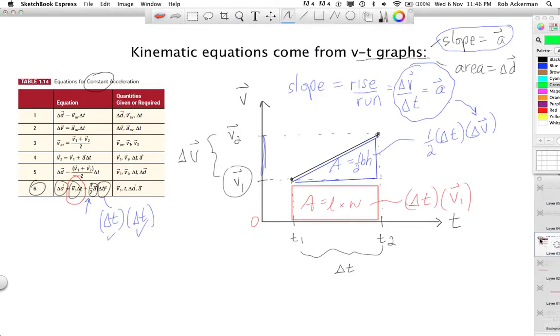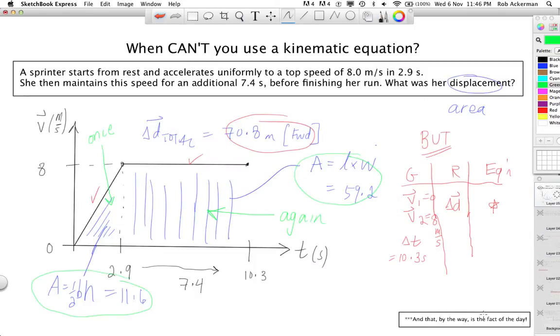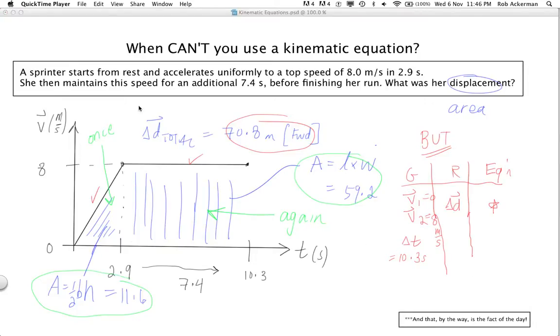And so that brings me to the fact of the day, or the fact of the lesson. It is that you can't use a kinematic equation if the acceleration is changing. You'll have to use one kinematic equation for one type of acceleration, and then another equation for another type of acceleration. And of course then you can combine the results. Lots of questions to try in the homework schedule, in the textbook. Lots of resources available online if you want further practice. And that's it. Have a great day, and I will see you guys in class. Thanks for watching.